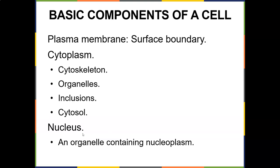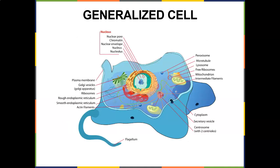The nucleus is the brain of the cell — it's an organelle containing nucleoplasm that basically tells the cell what to do. Some cells don't have a nucleus due to their shape; red blood cells do not have a nucleus. Here's what a generalized cell looks like. The nucleus in the middle has nuclear pores, chromatin, and a nuclear envelope to protect it, along with the nucleolus, which makes ribosomes.